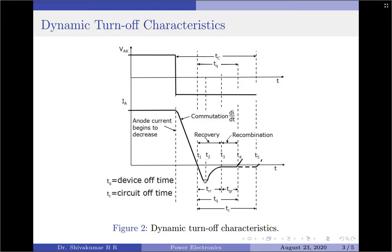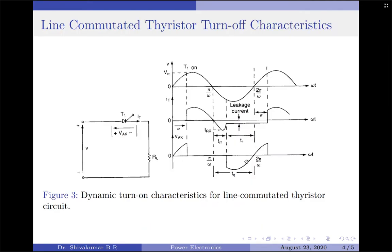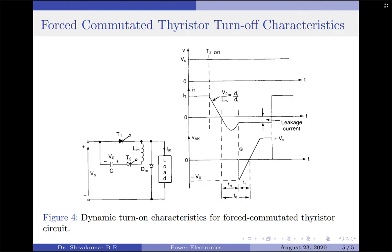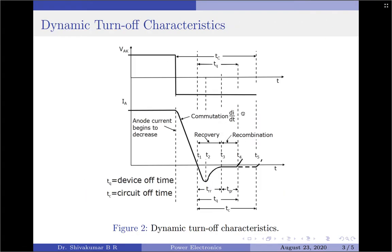The negative current applied between t1 and t2 helps to sweep out carriers from junctions J1 and J3. Due to the rapid decrease of anode current, a reverse spike voltage may appear across the SCR — a negative spike will appear across the SCR at the end of the reverse recovery time. The time interval between t1 and t3 is called the reverse recovery time. After that, the device starts to follow the applied reverse voltage and regains its ability to block the applied forward voltage.